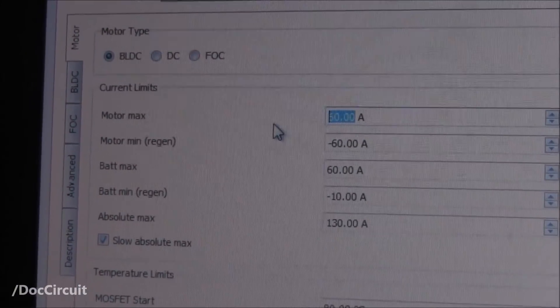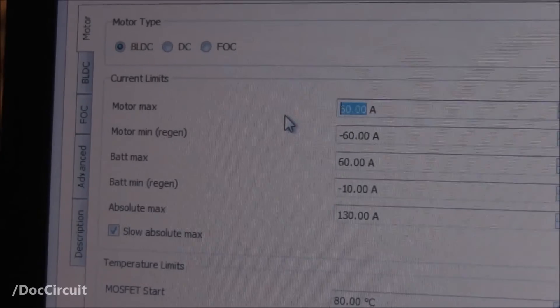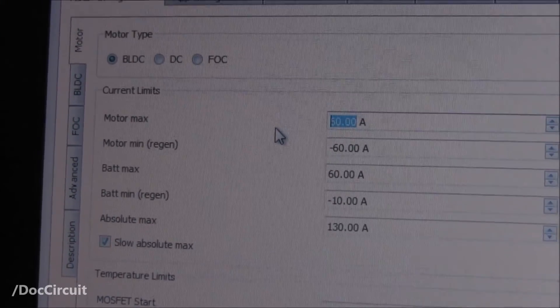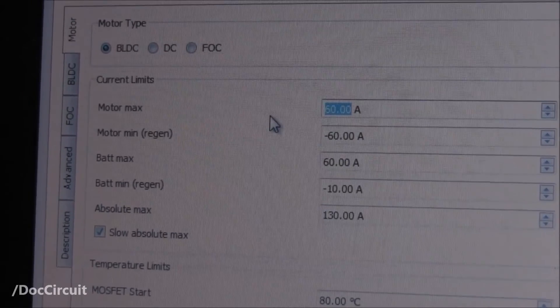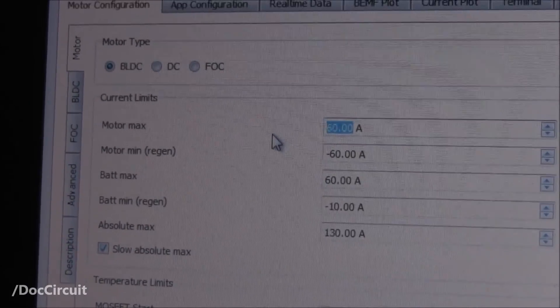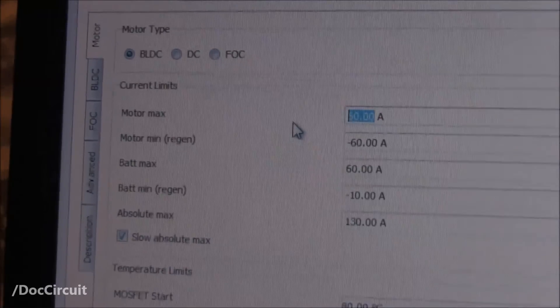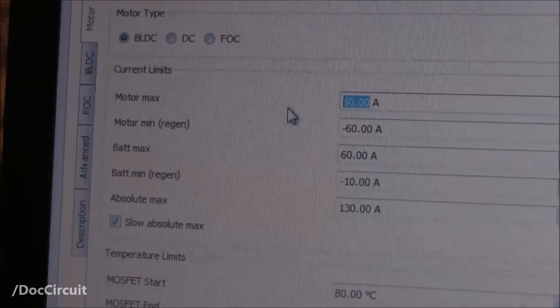The current limits. This is where you choose the limitations for the current draw. I've chosen 60 amps. This does mean that when it goes up a hill, if it's steep, it will slow down. I'd much prefer that to having the speed controller blow.